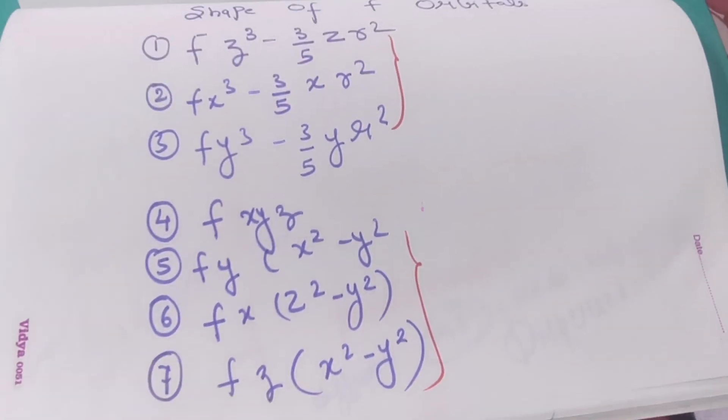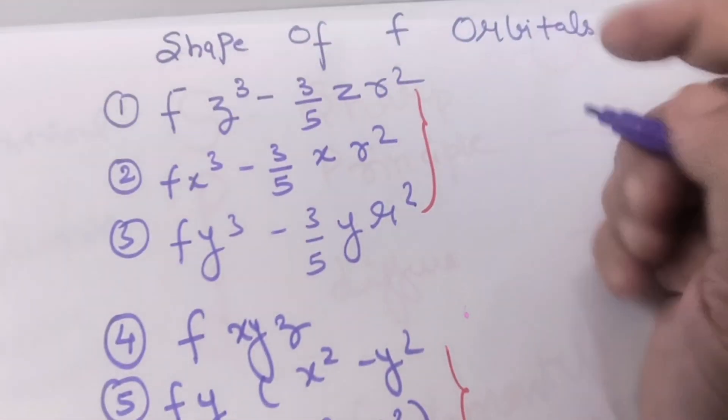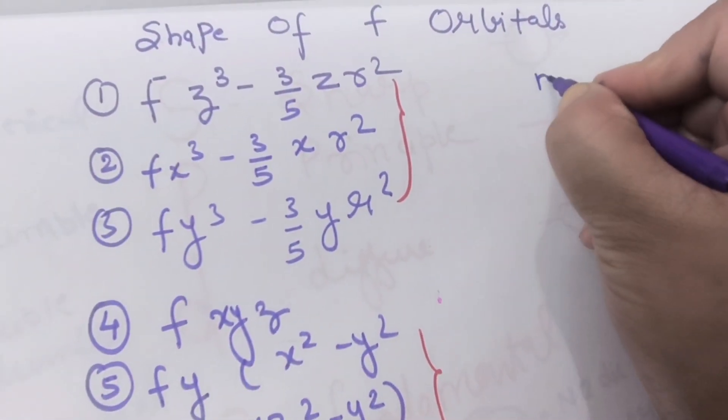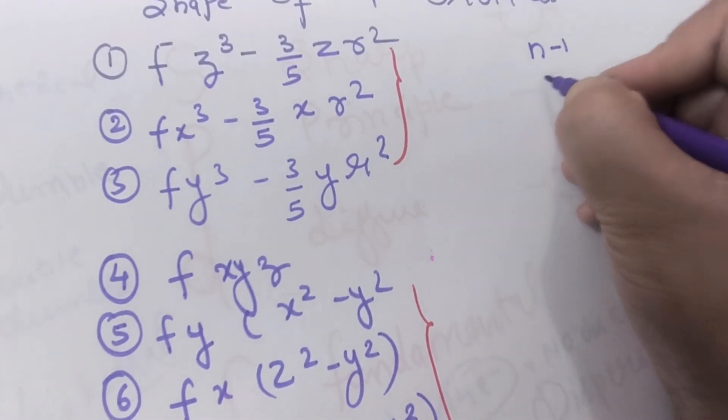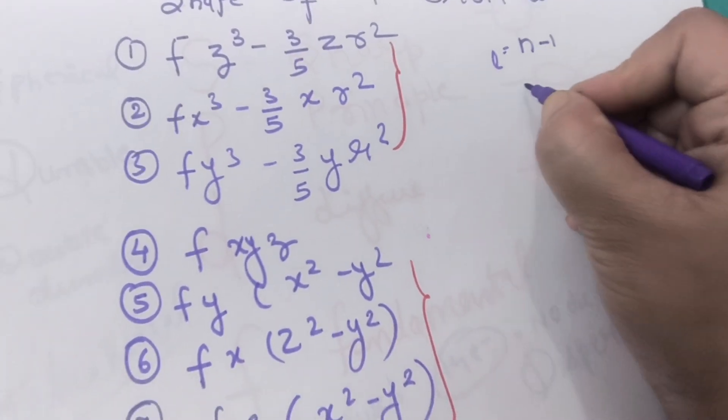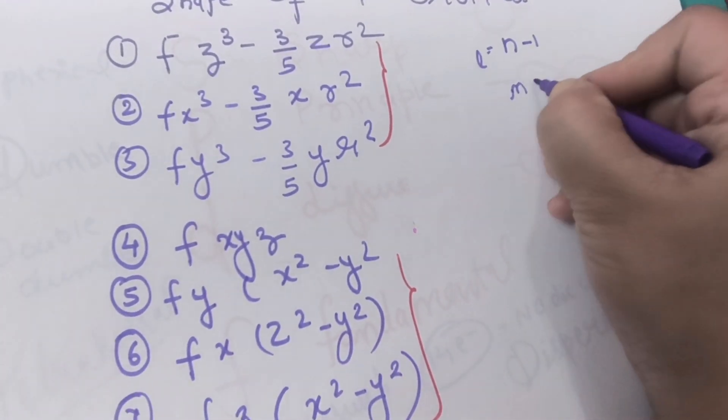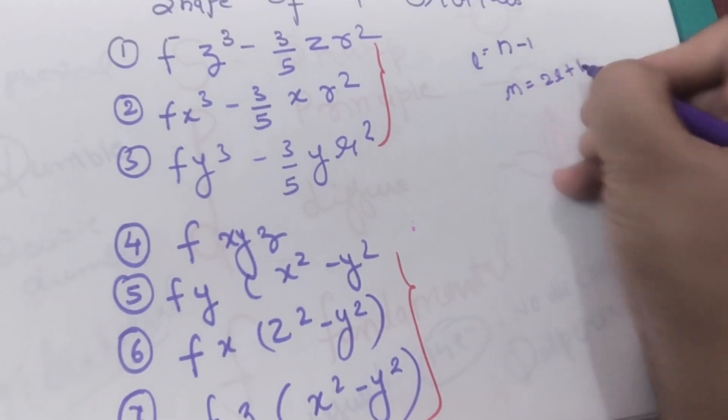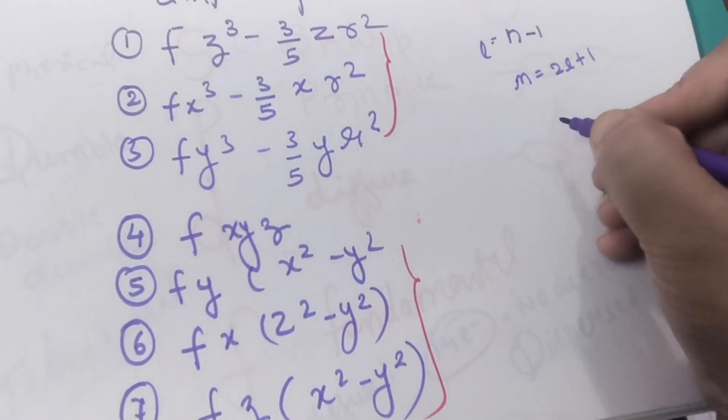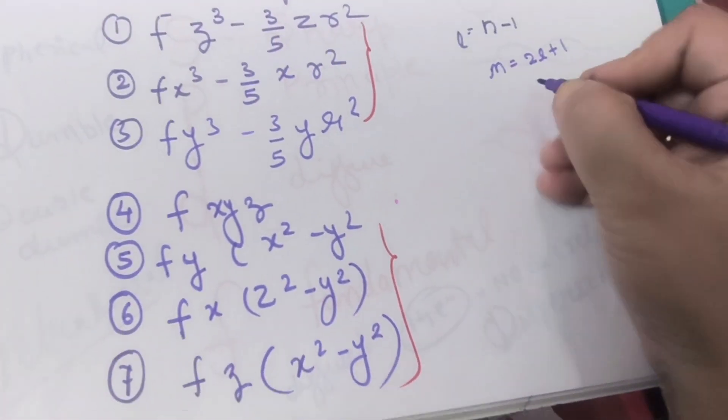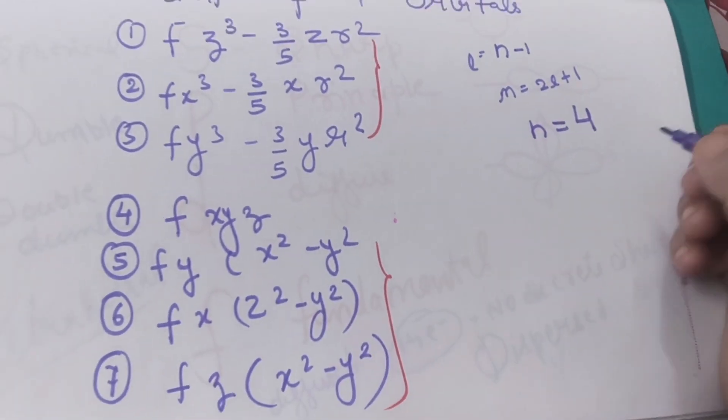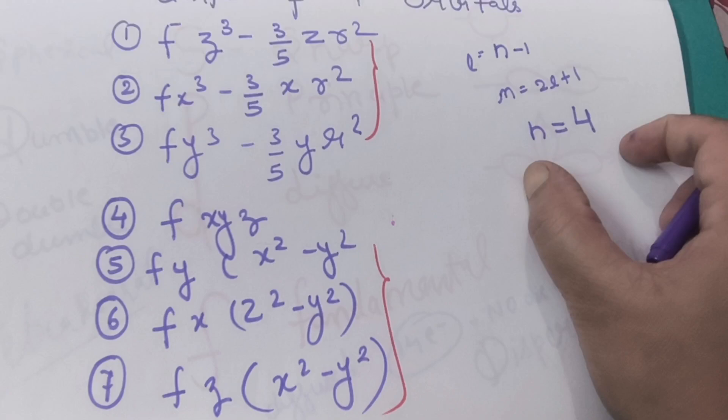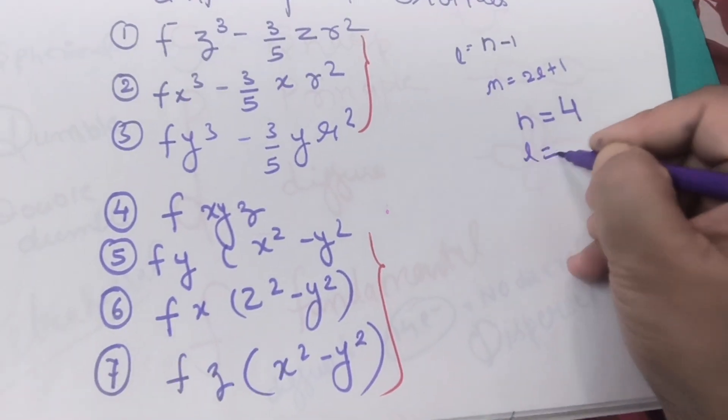What are the names of our seven f orbitals? When we calculate it from our formulas, the principal quantum number is represented by n, and if you want to calculate our azimuthal quantum number n minus 1 gives you l. Similarly, what is m? m is equals to 2l plus 1. If our l is equals to 3, what it comes?